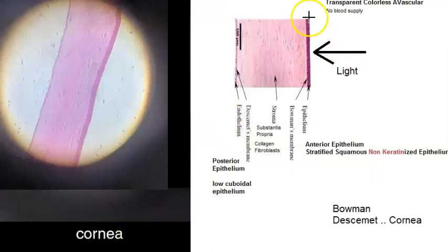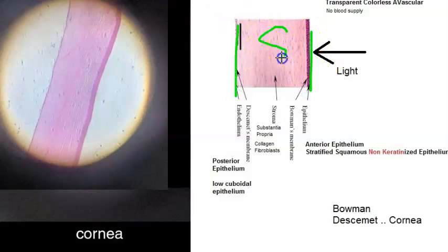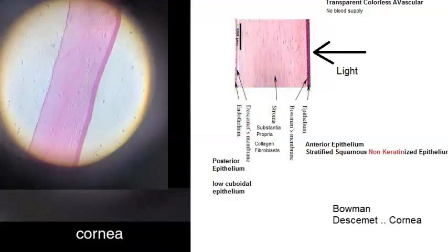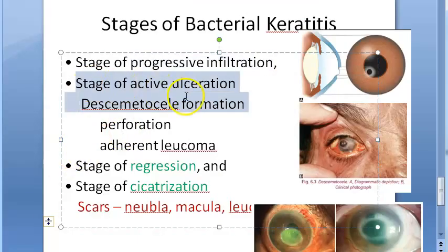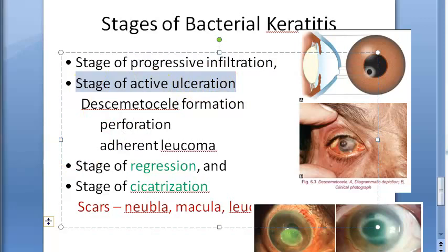The corneal epithelium is the outermost layer; behind it you have the stroma, and then the endothelium. What is happening to the epithelium? Abrasion, epithelial drying, necrosis, desquamation — all that epithelial damage is happening. Then comes ulceration.